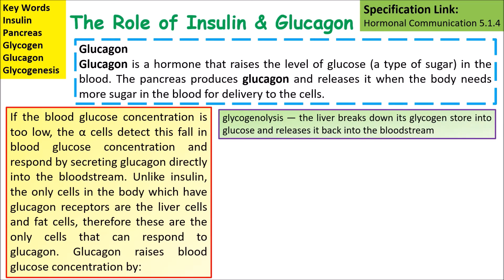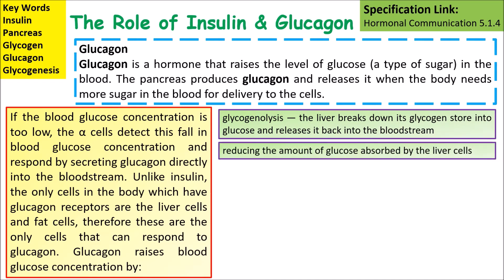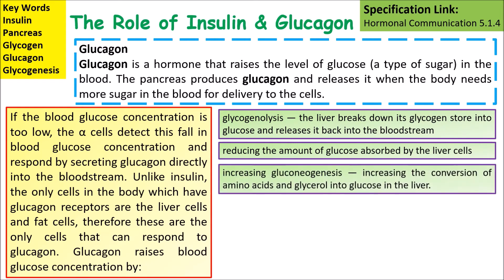Glucagon raises blood glucose concentration by glycogenolysis: the liver breaks down glycogen into glucose and releases it back into the bloodstream. It also reduces the amount of glucose absorbed by the liver cells, and increases the conversion of amino acids and glycerol to glucose in the liver.